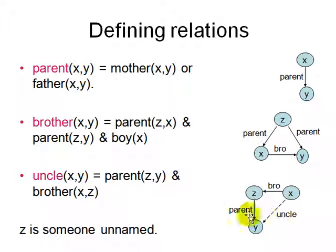Uncle is defined similarly. X is an uncle of y if y has a parent z and z has a brother x. So we need one more element. X and z have a common parent, and then z, where z is somebody unnamed. We will look at how to capture the unnamed element in the relationship later on using quantifiers.